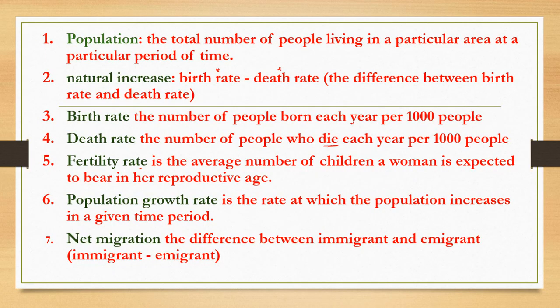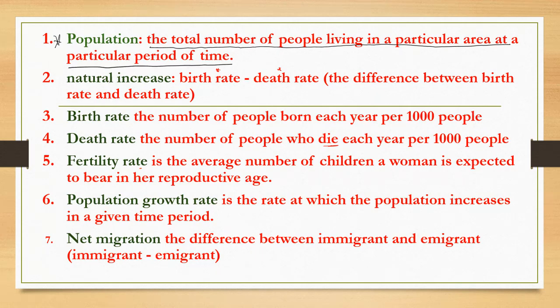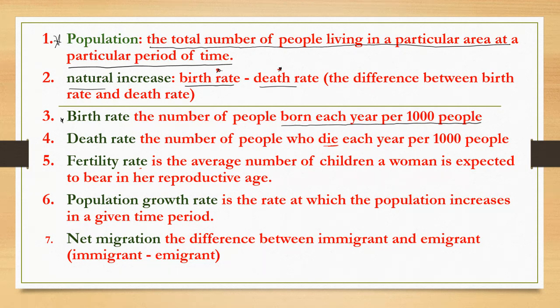There are certain keywords that are very important in studying this topic. Population is the total number of people living in a particular area at a particular period of time. Natural increase has to do with birth rate minus death rate — the difference between births and deaths in a particular area. Birth rate is the number of people born each year per 1,000 people, and death rate is the number of people who die each year per 1,000 people.